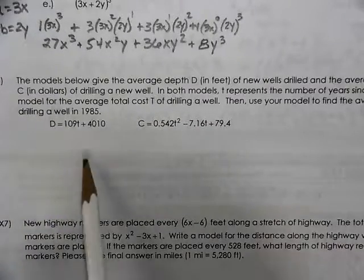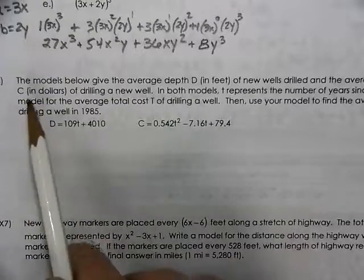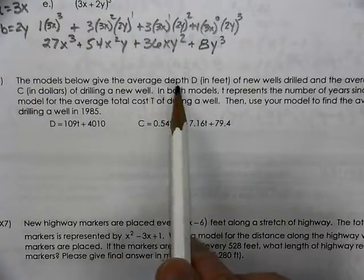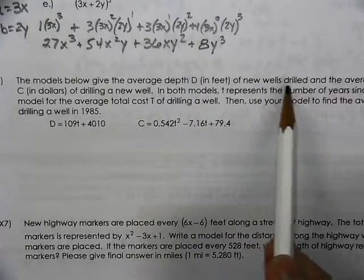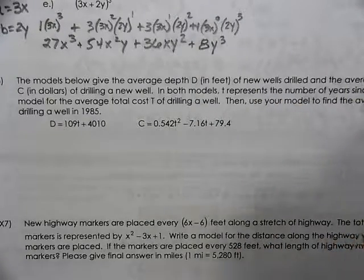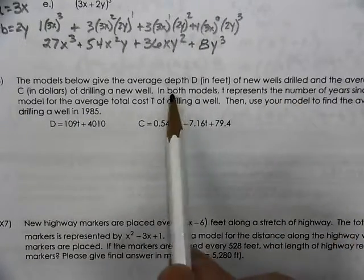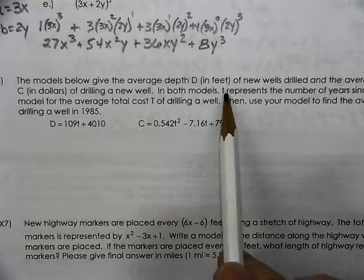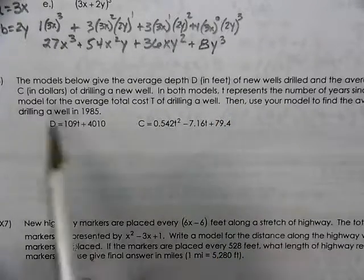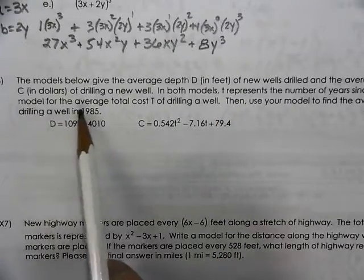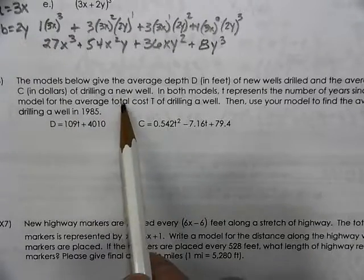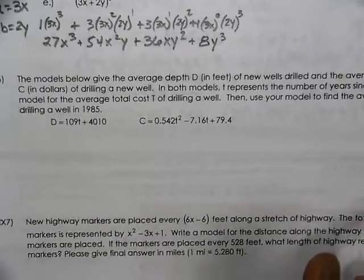All right, here we go. This is really strange and really crazy, but the model below gives the average depth in feet of a new well and the average cost per foot of a new well. Both models, the t will represent a number of years. Write a model for the average total cost of t for drilling a well.